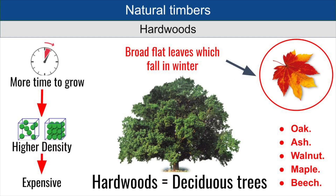As we found out earlier on in the lesson, natural timbers belong to one of two categories: hardwoods or softwoods. Let's take a look at hardwoods first. Hardwoods originate from deciduous trees. It's easy to tell if a tree is a deciduous tree — and therefore produces hardwood — as these have broad, flat leaves which fall off in the winter.